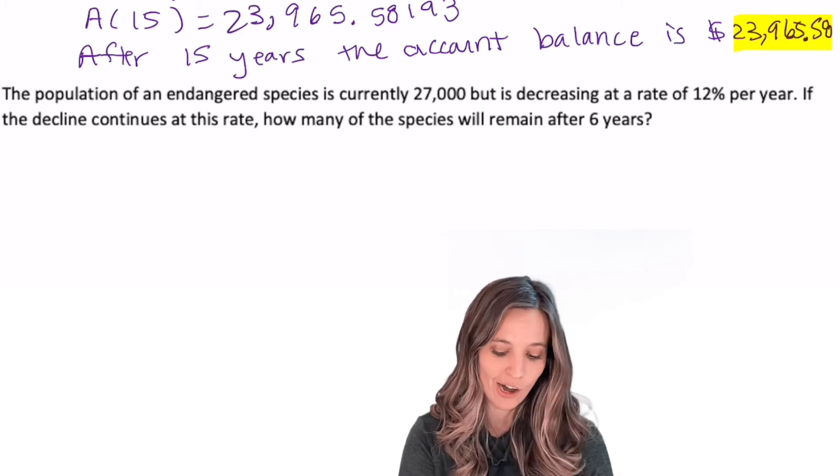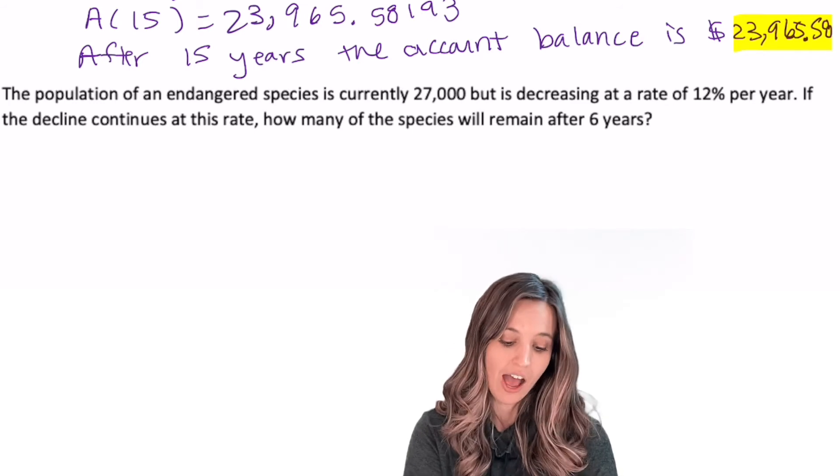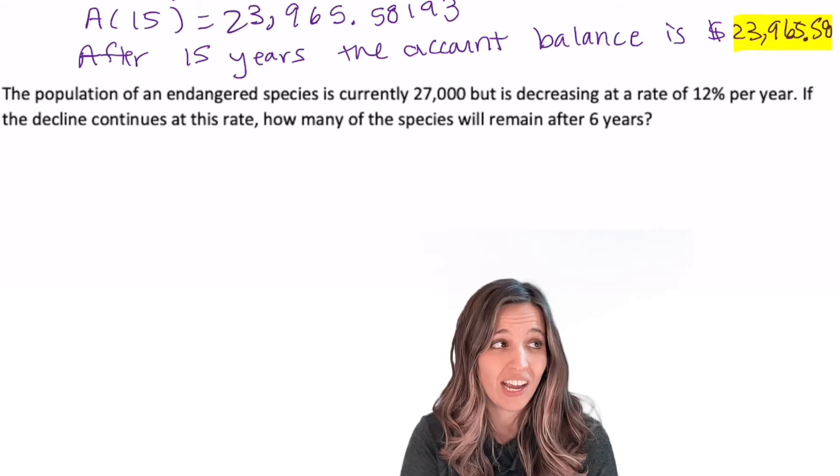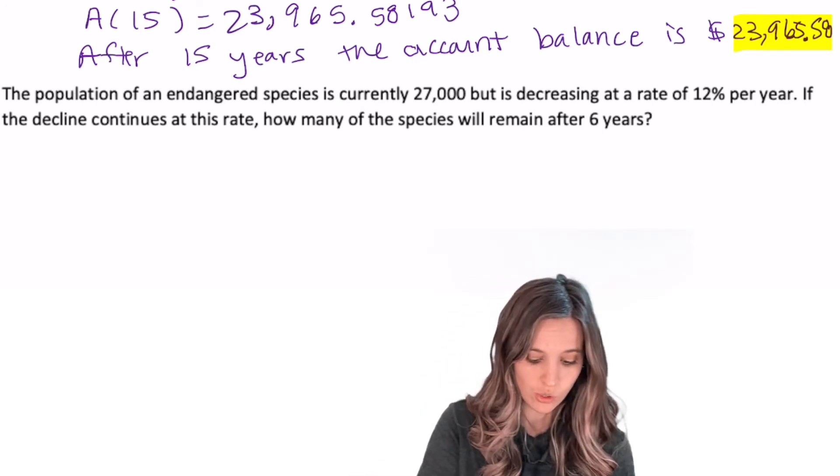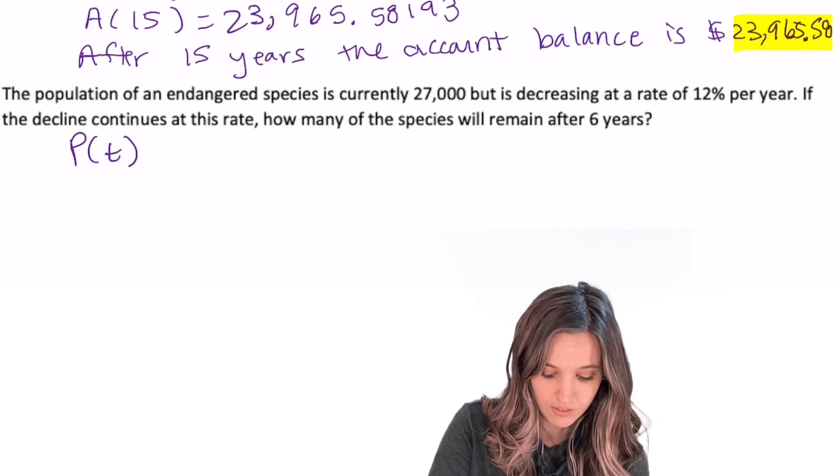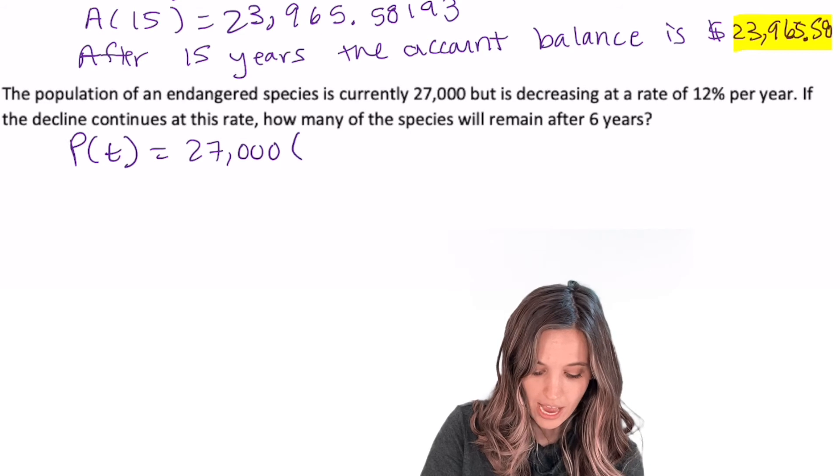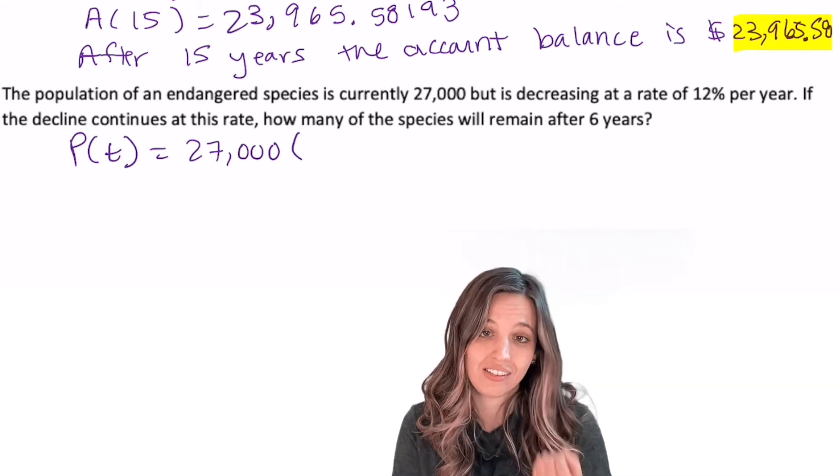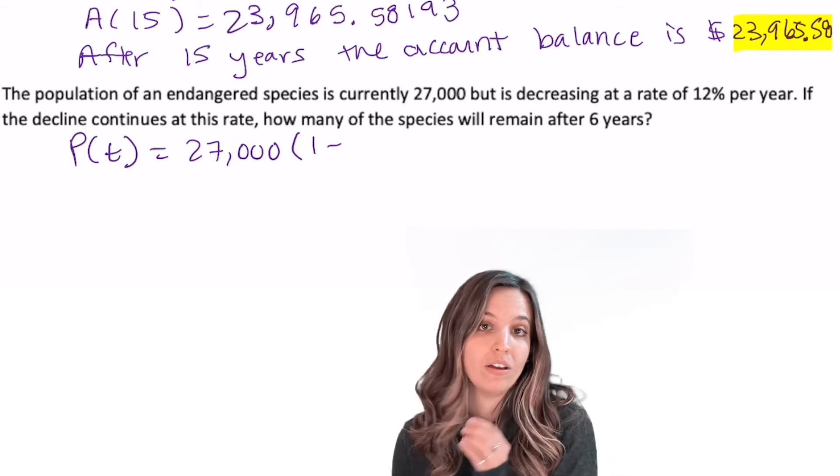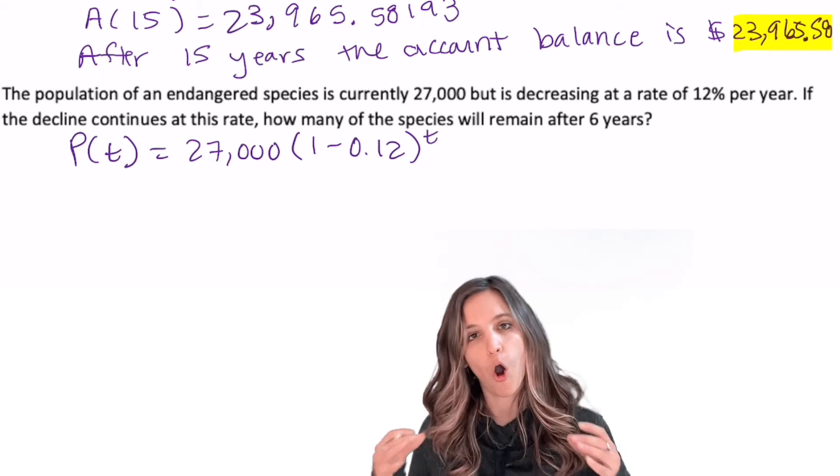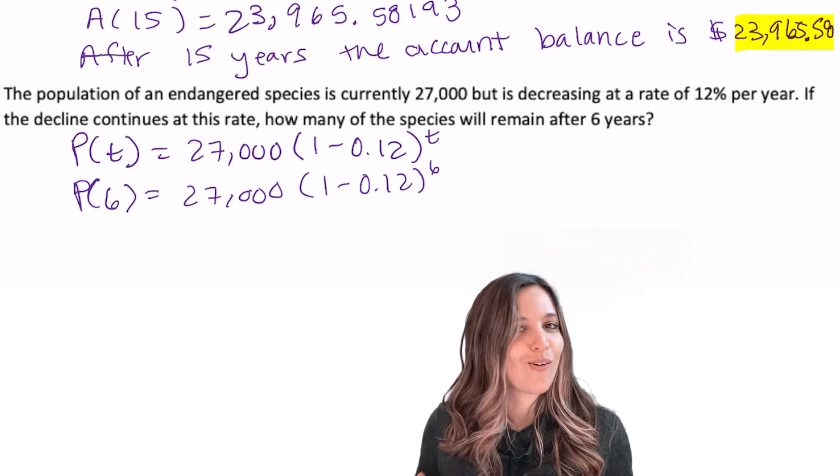Let's try another. The population of an endangered species is currently 27,000, but is decreasing at a rate of 12% per year. If the decline continues at this rate, how many of the species will remain after six years? I heard decrease in there. So I know I'm going to need to use a decay model. This is population. So let's use P of T. I know the initial population is 27,000. And then I'm going to do my 1 minus R because this is decay. So 1 minus, my rate, it's not 12, it's 0.12 to the T power. Always write your model first.